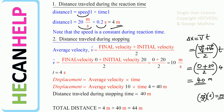Average velocity equals final velocity plus initial velocity divided by 2. Final velocity is 0, initial velocity is 20, so 0 plus 20 divided by 2 is 10 meters per second. Time is 4 seconds. So displacement equals average velocity times time, and that is 40 meters. We have 40 meters during the braking phase and 4 meters during the reaction time. Adding 4 and 40 gives us 44 meters. So our answer is 44 meters.